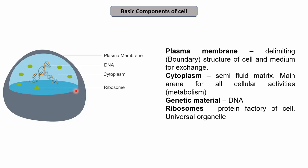Next is the ribosome. Ribosomes are the protein factories of the cell and they are universal organelles — by universal, I mean they are present in each of the entities which exist on Earth.